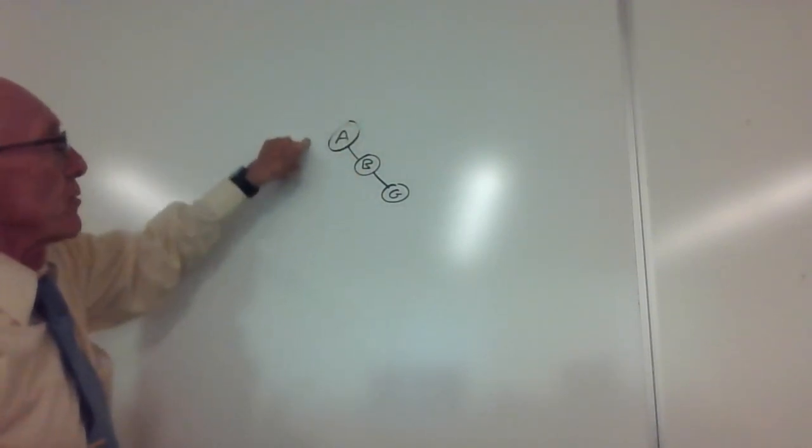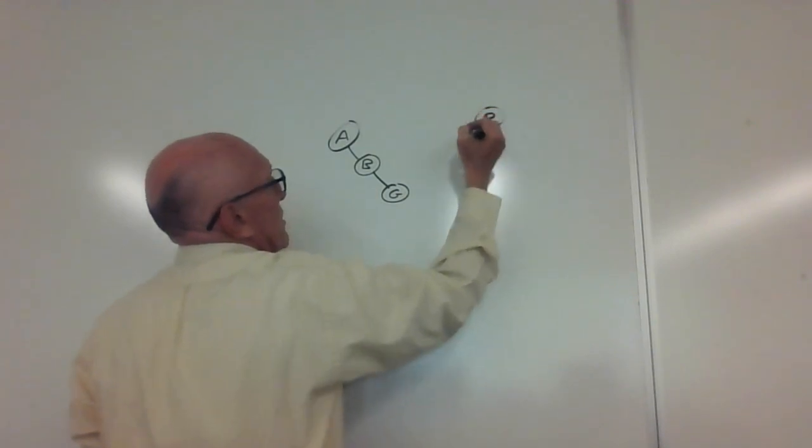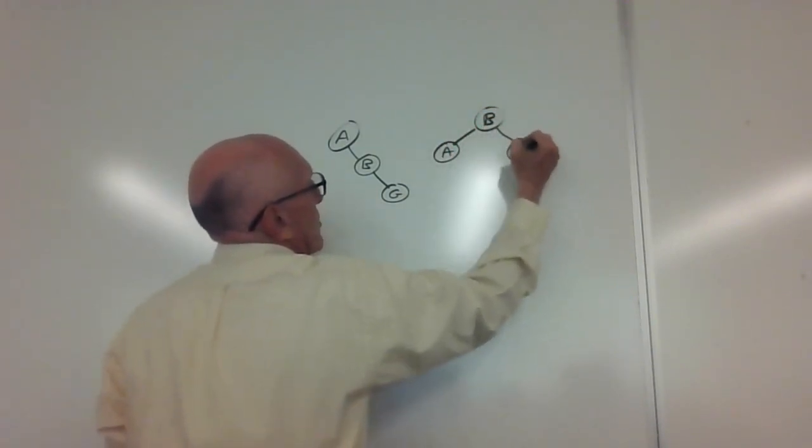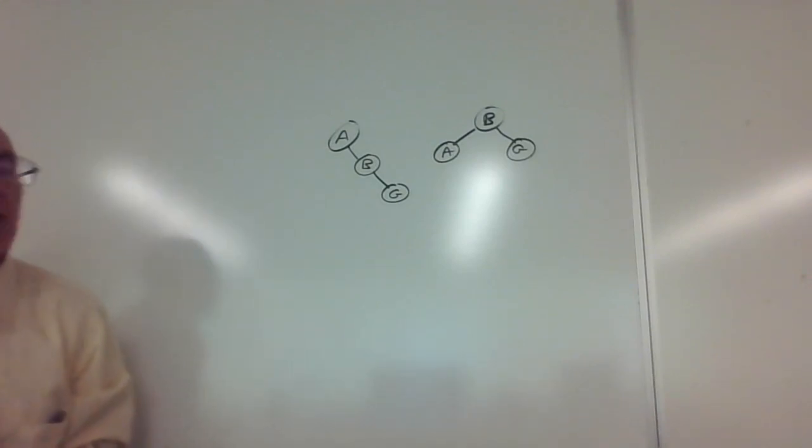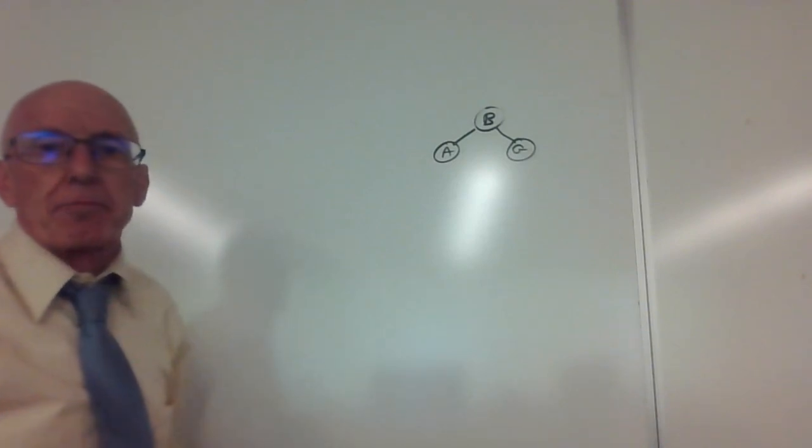That means we need to do a left rotation. The B will come up to here, the A will move down to the left, and we'll end up with the G here. So far so good. Now we have a tree that's in balance.